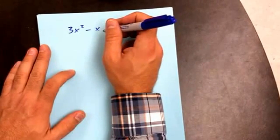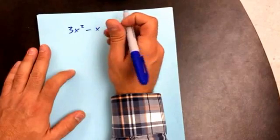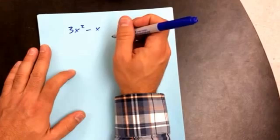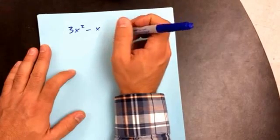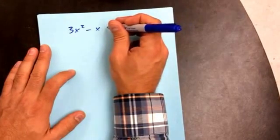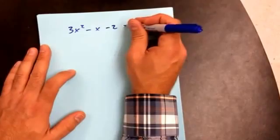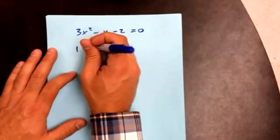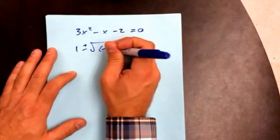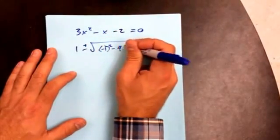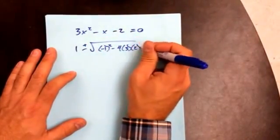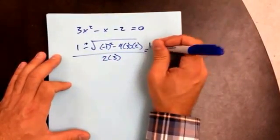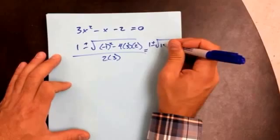I'm going to change this just a little bit. What do I need to change it to? Minus 2. Minus 2. Okay, now I'm going to go through the same process. So negative negative 1 is 1 plus or minus the square root of negative 1 squared minus 4 times 3 times 2 divided by 2 times 3.